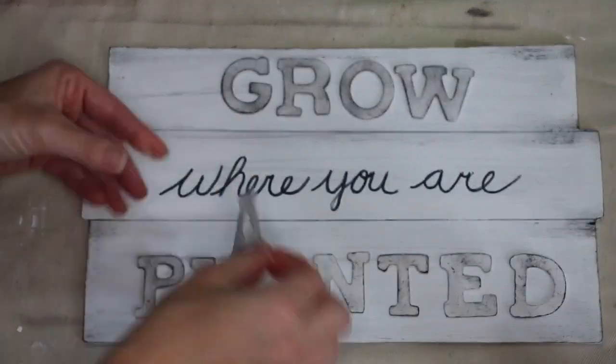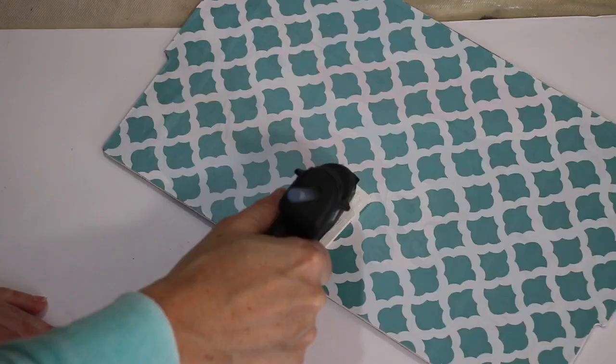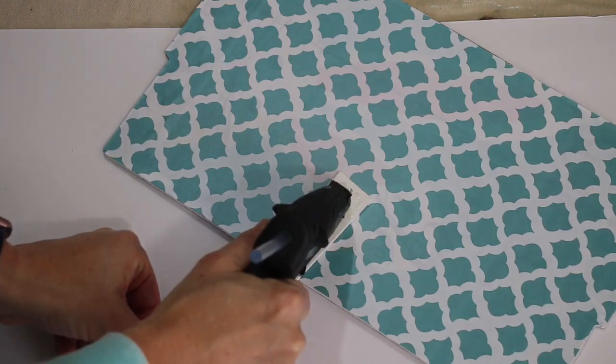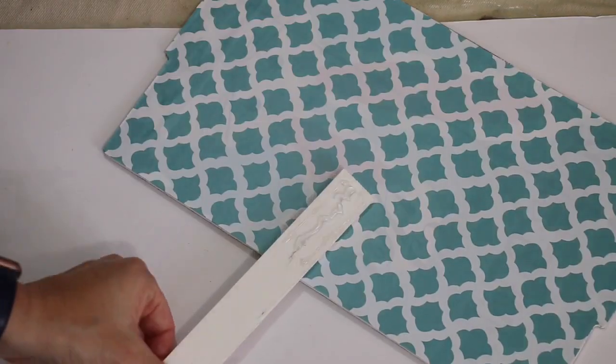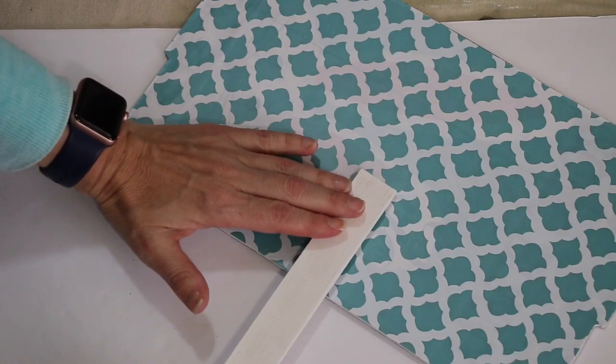Once those letters set and dried, I went ahead and I took my paint stick and I used hot glue as well as some E6000 and I glued that to the back of the sign.